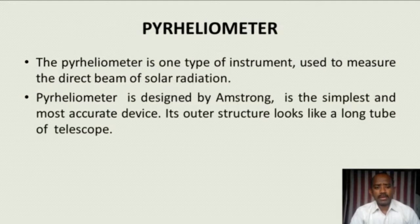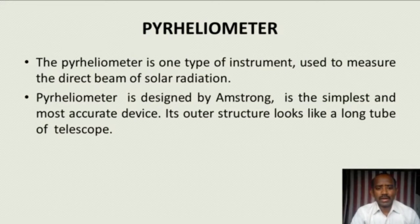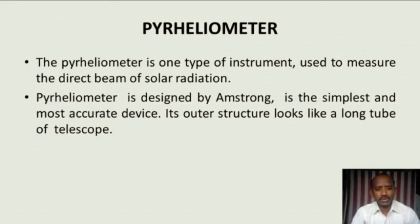The pyrheliometer is one type of instrument that is used to measure direct solar radiation. It means that it measures only beam radiation or direct radiation — solar radiation which is not scattered, not absorbed, or not reflected by the atmosphere. Such radiation is called direct radiation, and the pyrheliometer measures it.